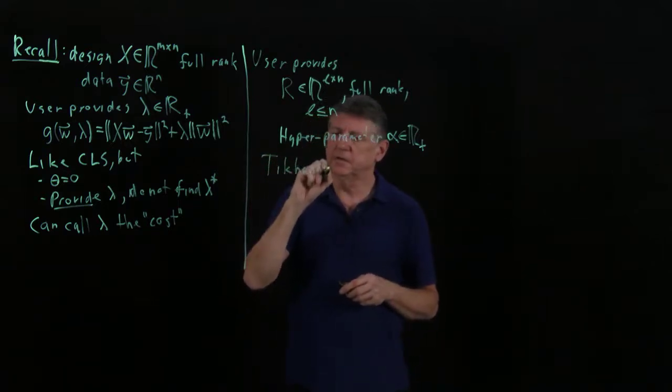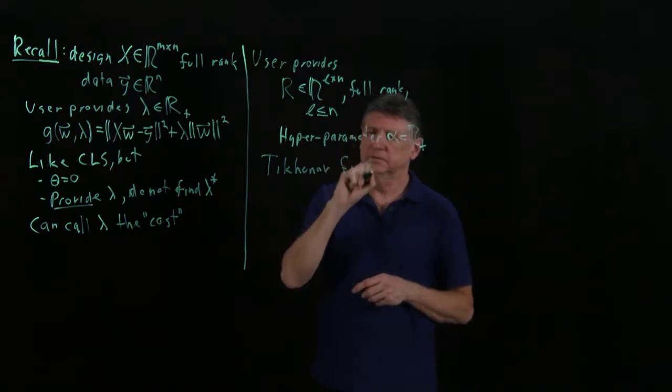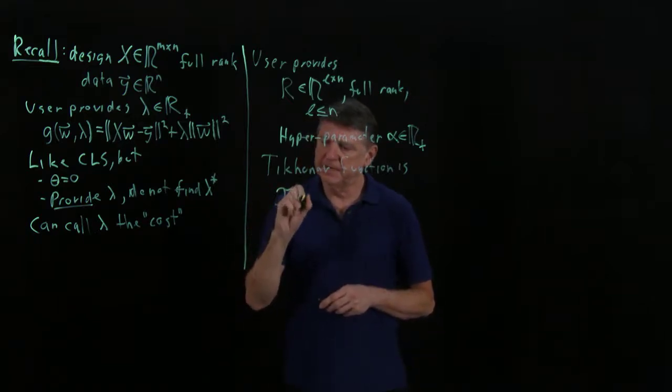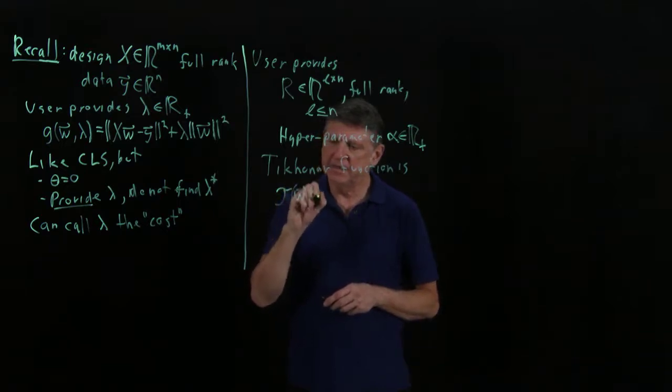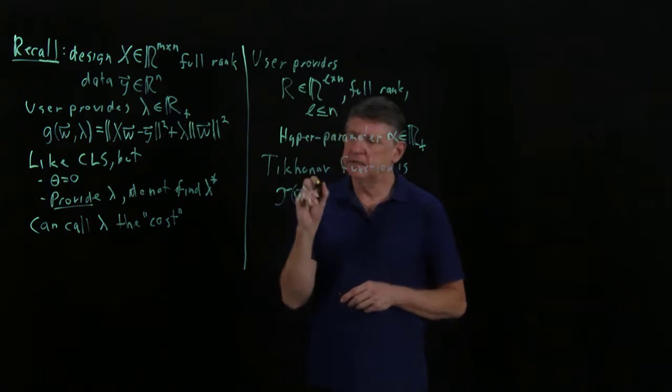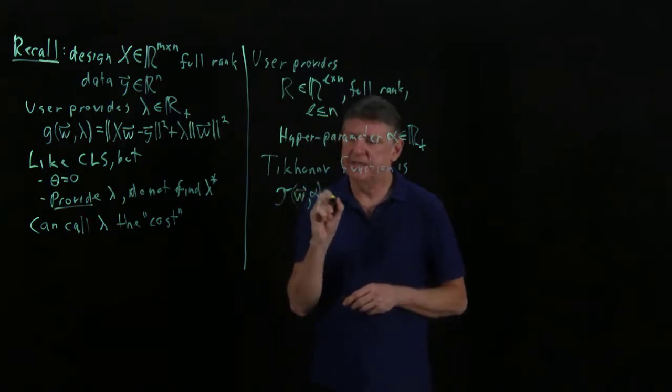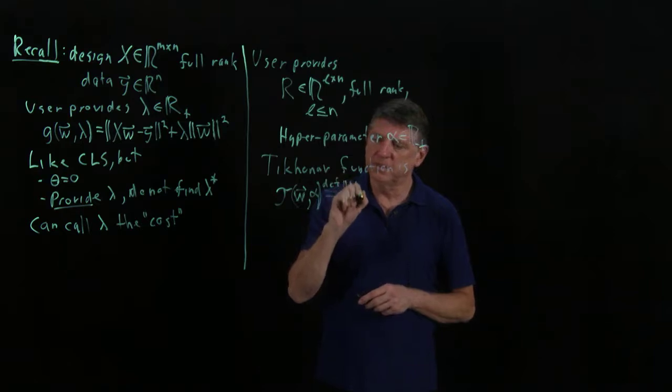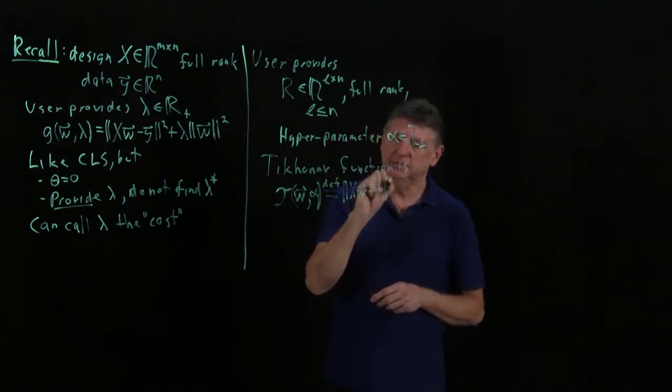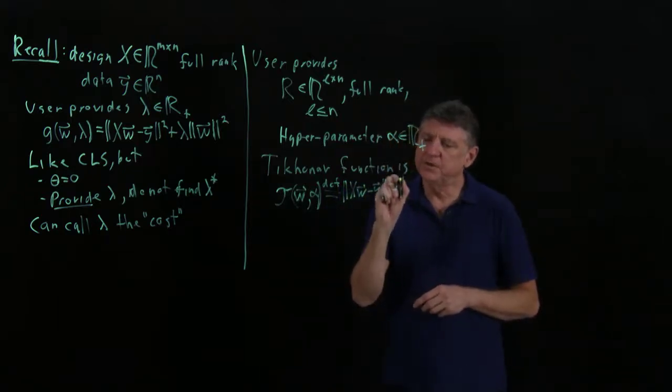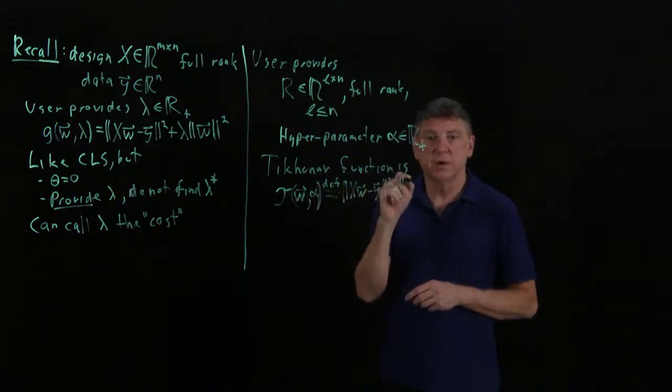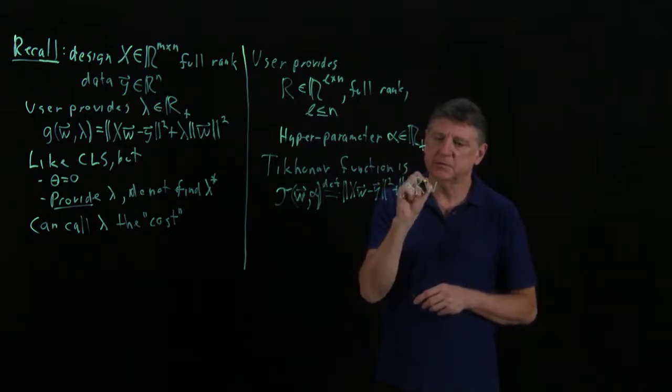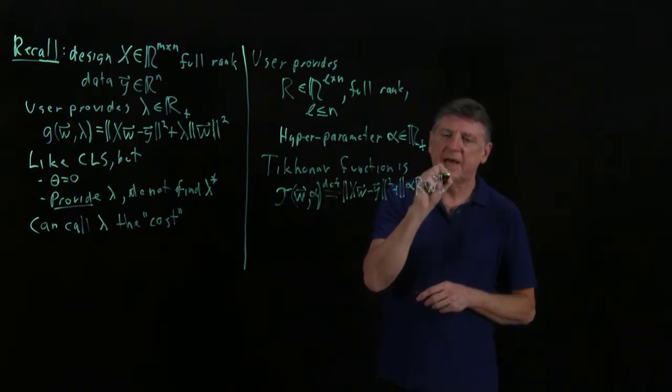The Tikhanov regularization function T has the vector argument and alpha, with R implicit. It's defined as the squared norm of the residual error of the regression, plus alpha times the regularization matrix times the vector argument, squared.